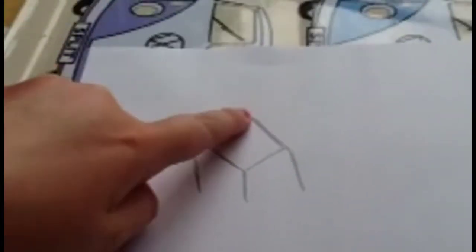To start off with, draw this shape. Draw three more lines on each corner apart from this one, this one.